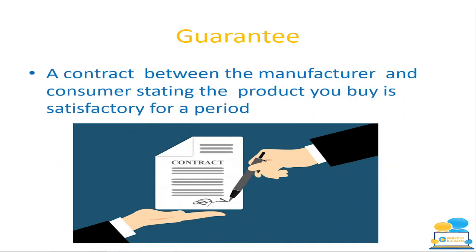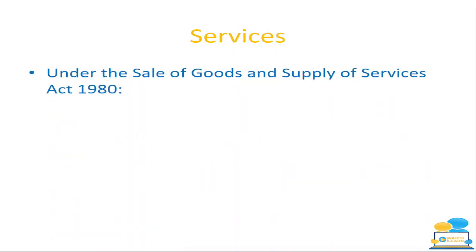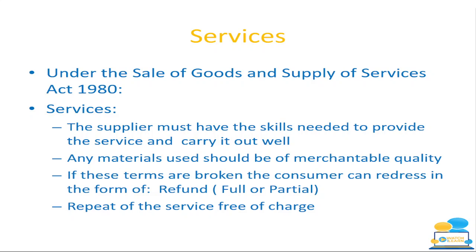A guarantee is a contract between the manufacturer and the consumer stating the product you buy is satisfactory for a period of time. Under the Sale of Goods and Supply of Services Act 1980, the service supplier must have the skills needed to provide the service — you are not going to get a mechanic to do your nails, or a beautician to service your car. Any materials used should be of merchantable quality. For example, if you need a new screen for your iPhone, that new screen should do what it's supposed to do. If it breaks after two days through no fault of yours, you can go back to the company under the act. If the terms are broken, the consumer can get a refund, full or partial, and a repeat of the service free of charge.